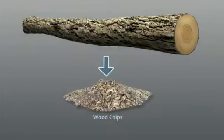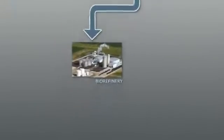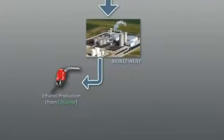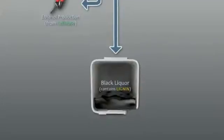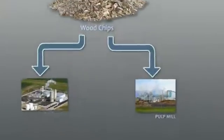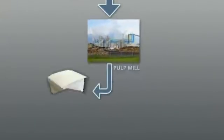At the bio refinery, lignin is dissolved away from the cellulose into black liquor and ethanol is produced from the cellulose contained in the wood chips. At the pulp mill, lignin is also dissolved away from the cellulose into black liquor.